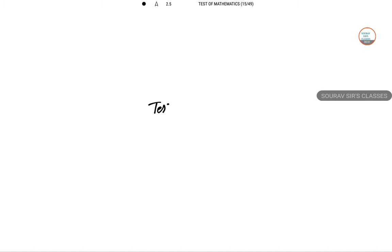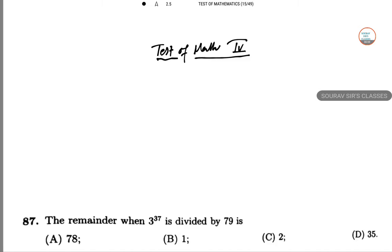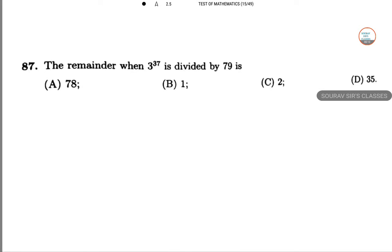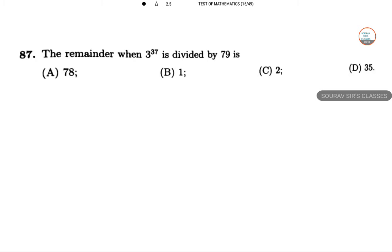Students, this is Test of Mathematics solution part 4. This is problem 87: The remainder when 3 to the power 37 is divided by 79. So if we take 3 to the power 4 and divide by 79, this gives a remainder of 2 in modular arithmetic.